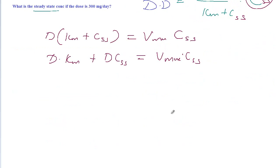If you rewrite this one, D times Km equals Vmax times CSS minus dose times concentration at steady state.